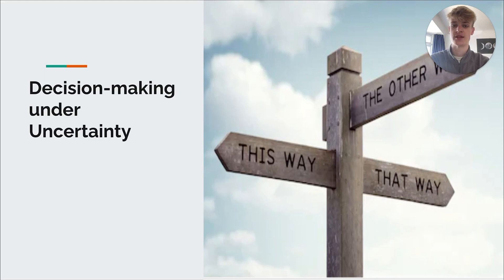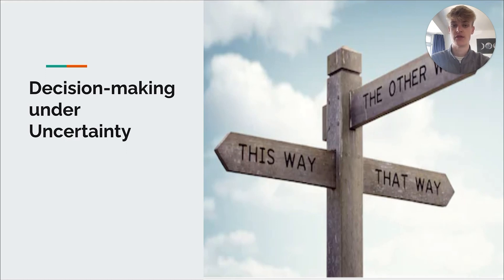Why is decision-making under uncertainty such an important problem? Every real-world decision is made under uncertainty, from being unsure whether to bring an umbrella to work in case it rains, to leaders in the Cold War deciding whether to increase the readiness of nuclear weaponry, or even non-trivial cases of not knowing which project to pursue given uncertainty over impact. With AI models making more and more decisions for society, it is incredibly important that they make good ones and accommodate for both information and moral uncertainty.